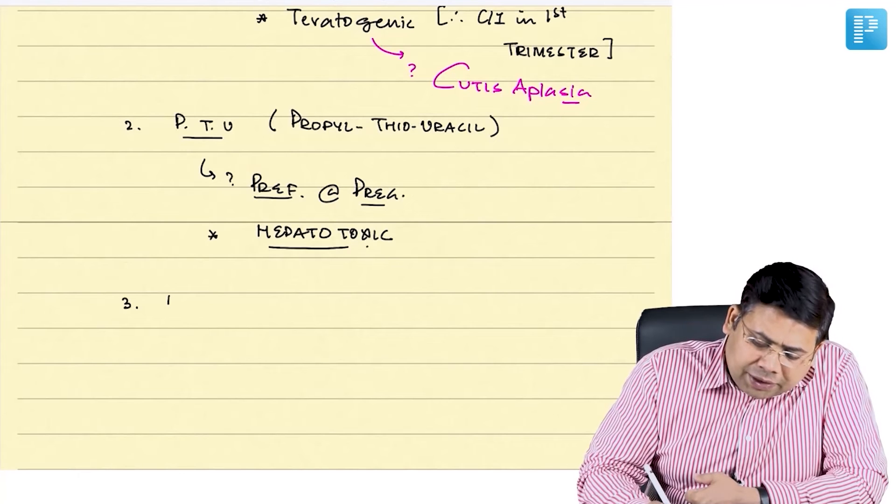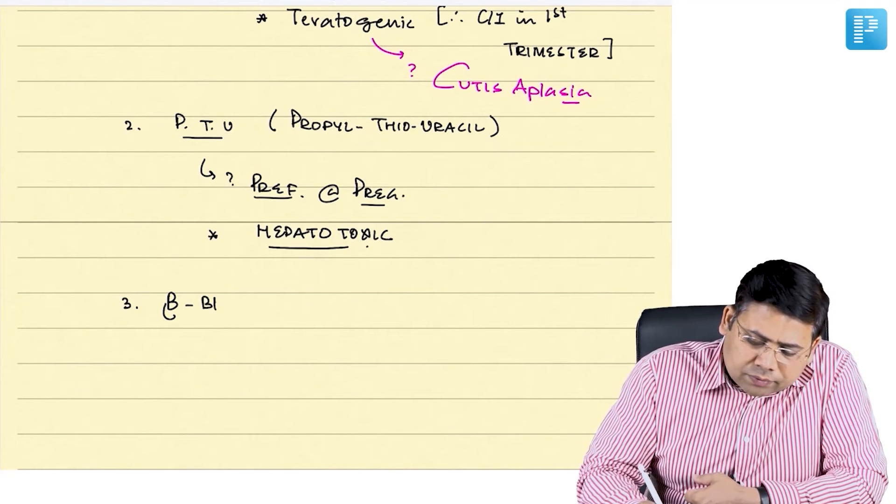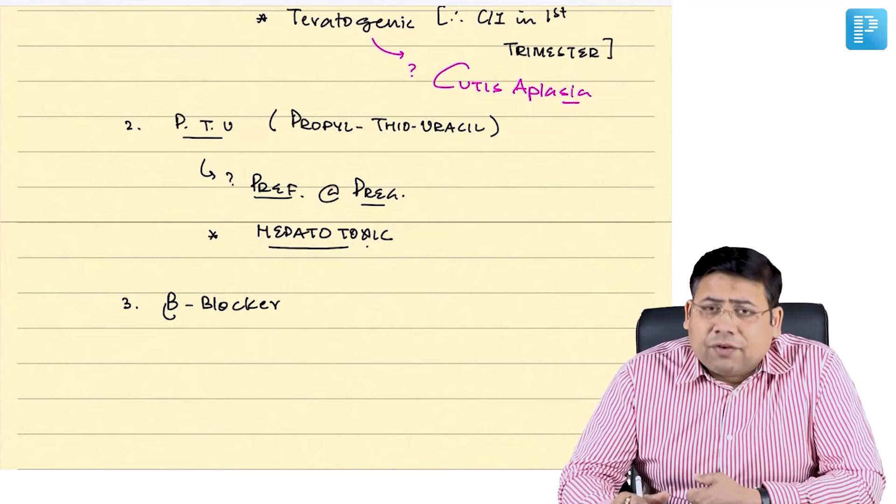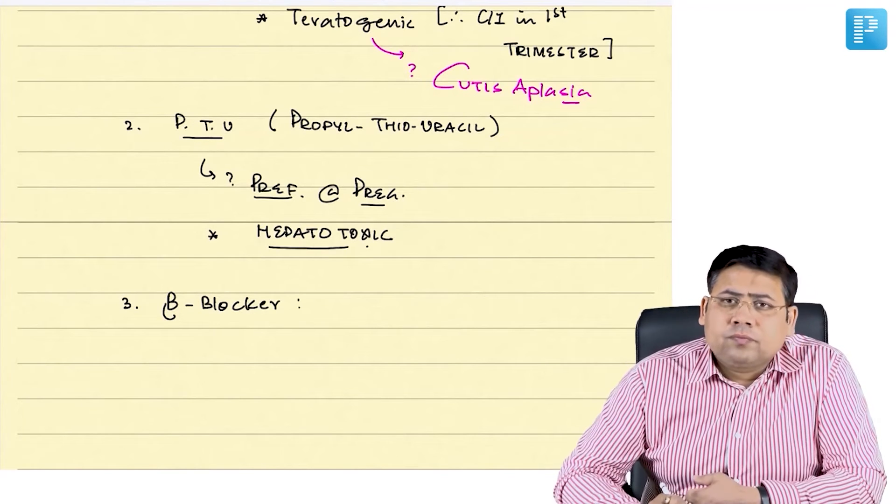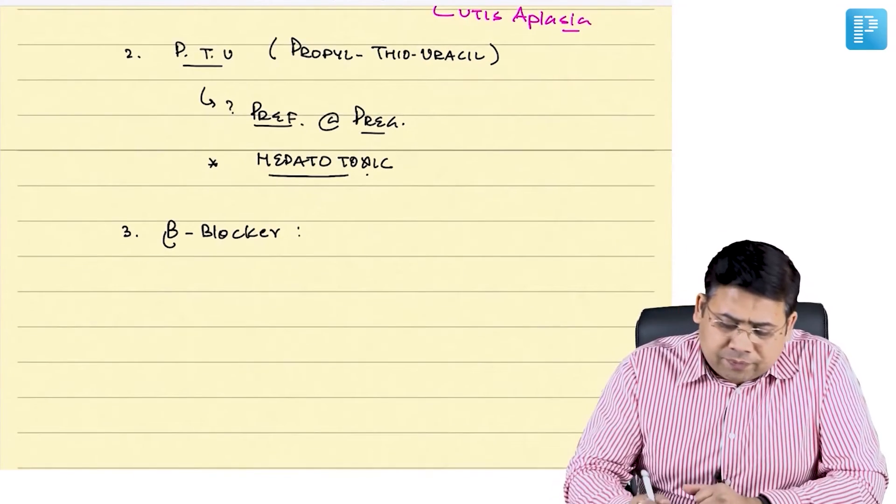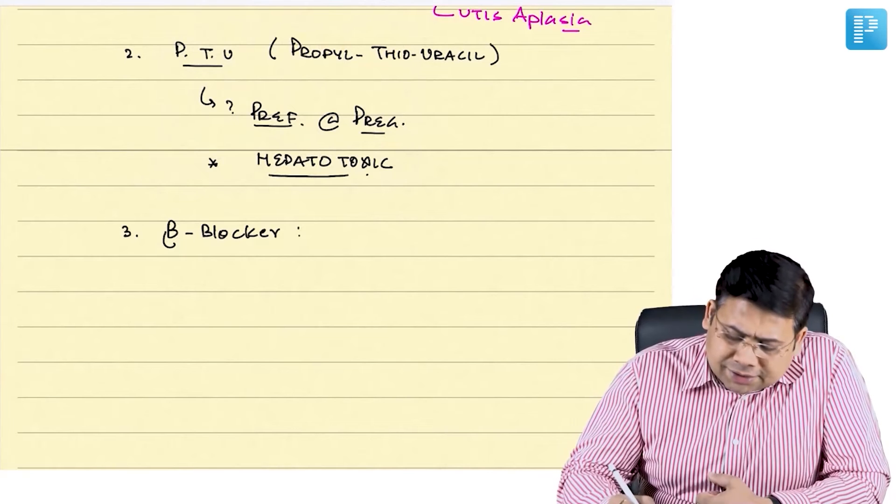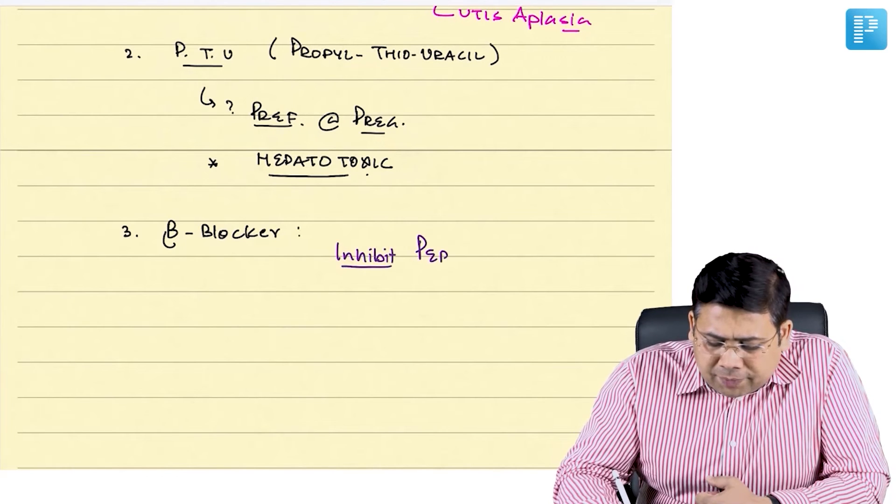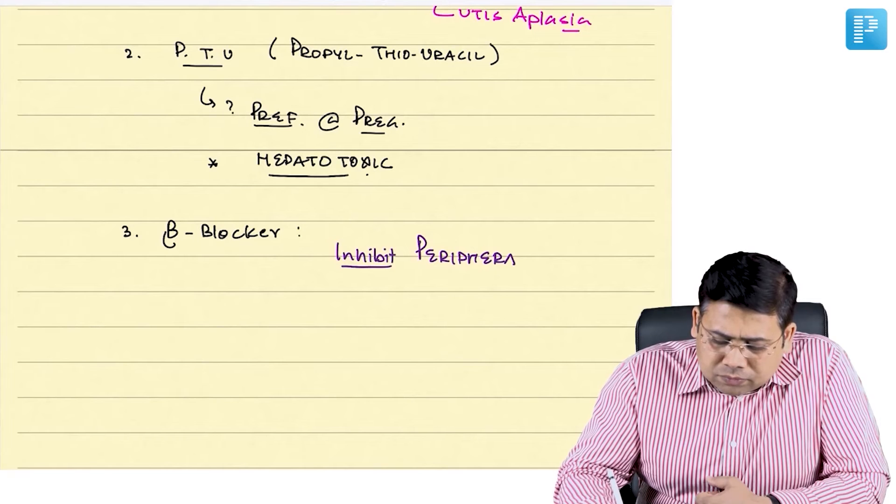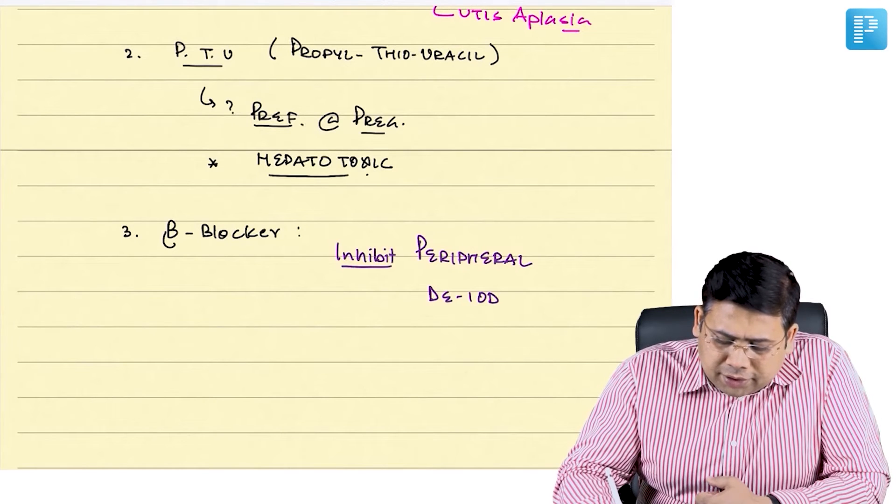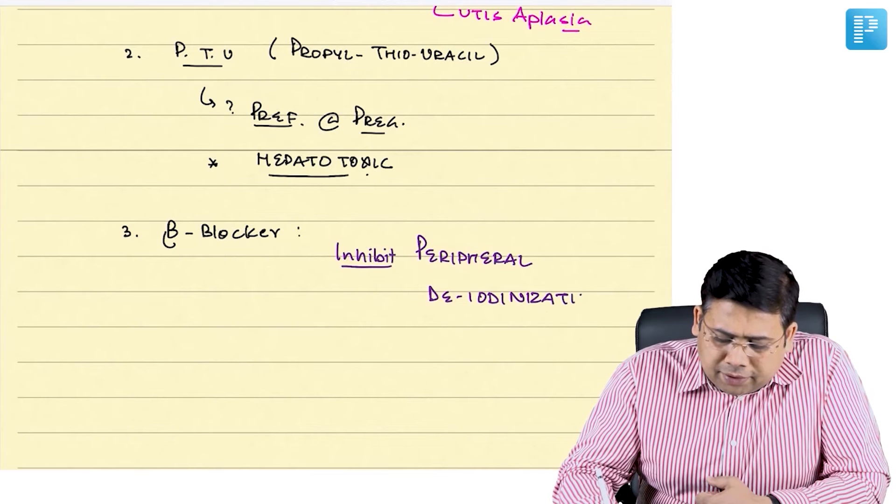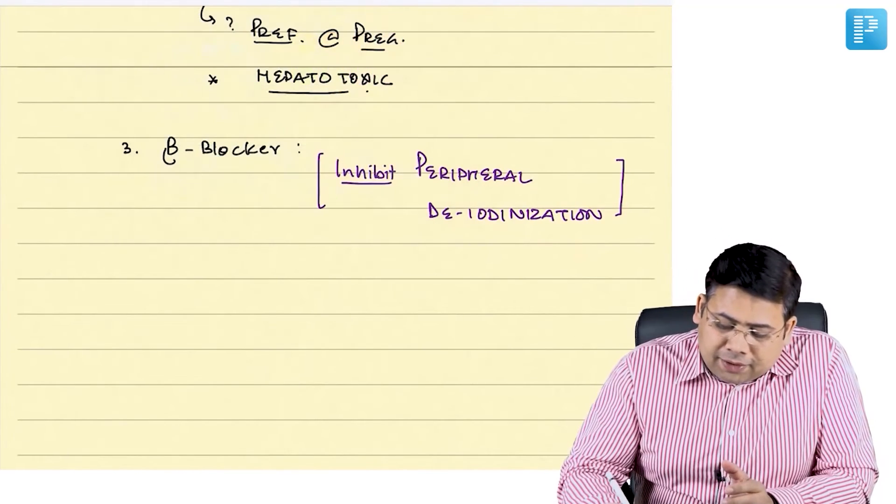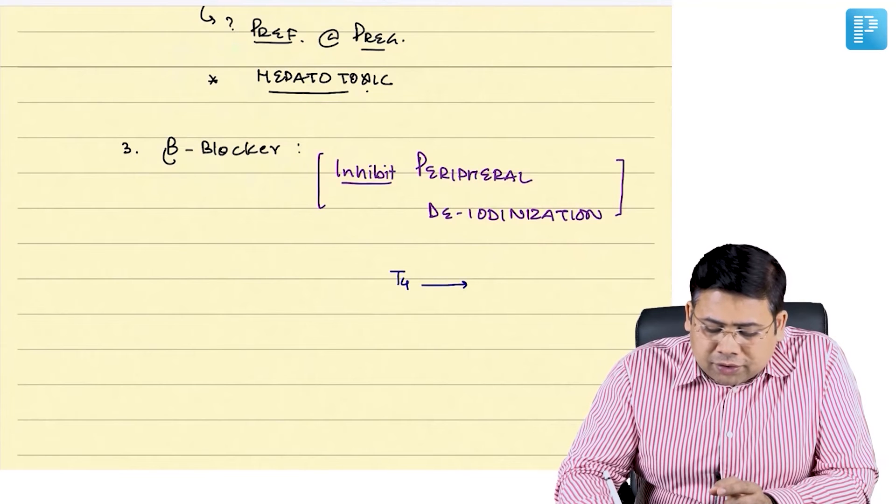The third option that we have is beta blockers. We have metoprolol, we have propranolol, we have nadolol. Beta blockers, they have a dual role. What is their role actually? How they are helping this thyroid crisis is, they inhibit peripheral deiodinization. They halt the conversion of T4 into free T3.